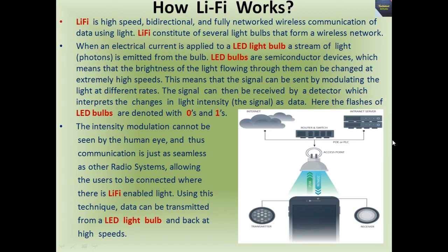The signal can then be received by a detector which interprets the changes in light intensity as data. The flashes of LED bulbs are denoted with zeros and ones. The intensity modulation cannot be seen by the human eye, and thus communication is just as seamless as other radio systems, allowing users to be connected wherever there is Li-Fi enabled light. Using this technique, data can be transmitted from an LED light bulb and back at high speeds.